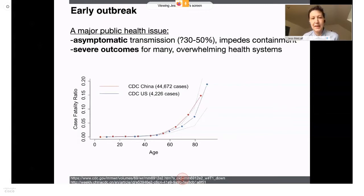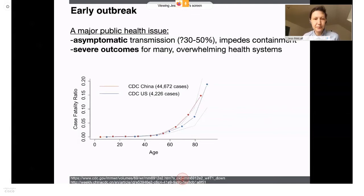In this particular pandemic, the virus can travel invisibly across very long distances. But the reason it's a problem is that this invisible transmission is combined with very severe outcomes for many, which can overwhelm health systems, as we've seen in China and now in Italy.